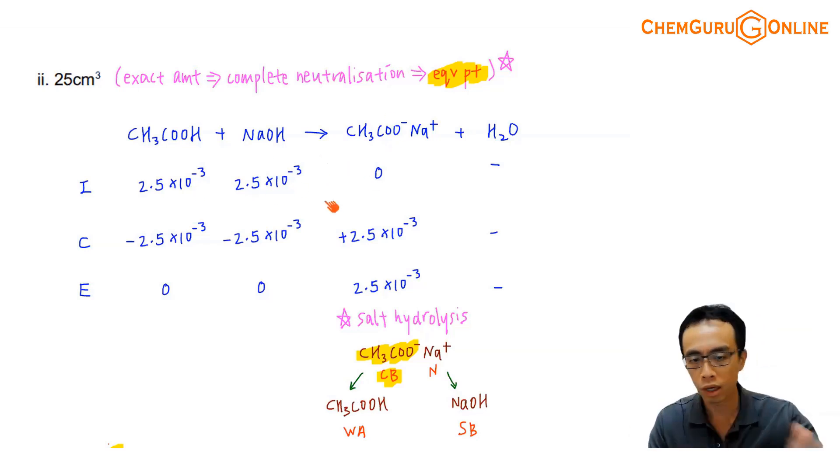So the ICE table, I think it is straightforward. I don't have any more acid, no more base, I'm only left with the salt. So remember earlier we've mentioned, equivalence point is nothing more than the salt solution, so the concept involving salt hydrolysis will come up.